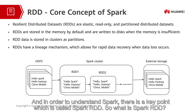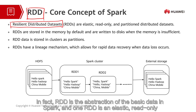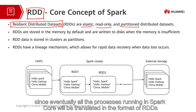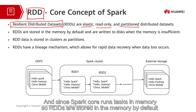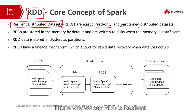And in order to understand Spark, there is a key point which is called Spark RDD. So what is Spark RDD? RDD is short for resilient distributed datasets. In fact, RDD is the abstraction of the basic data in Spark. And an RDD is an elastic, read-only, and partitioned distributed dataset. RDD is the foundation of Spark Core, since eventually all the processes running in Spark Core will be translated in the format of RDDs. And since Spark Core runs tasks in memory, RDDs are stored in the memory by default. But if the memory is not enough, then RDD can be written into hard disks. This is why we say RDD is resilient.